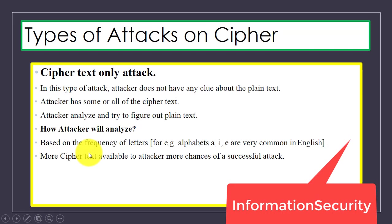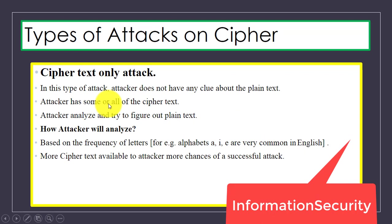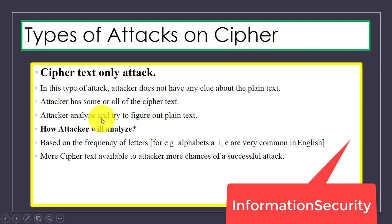In a ciphertext only attack, the attacker does not have any idea about the plain text. The attacker has some or all of the cipher text, and will analyze it to try to figure out the plain text from the cipher text — for example, based on the frequency of the letters.